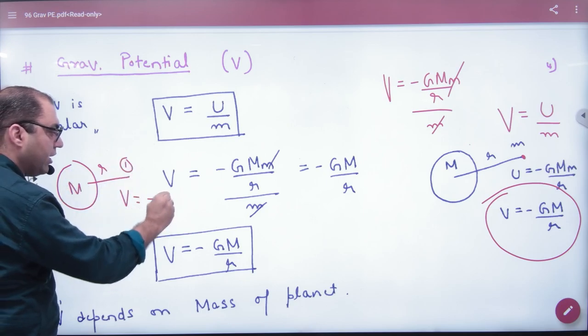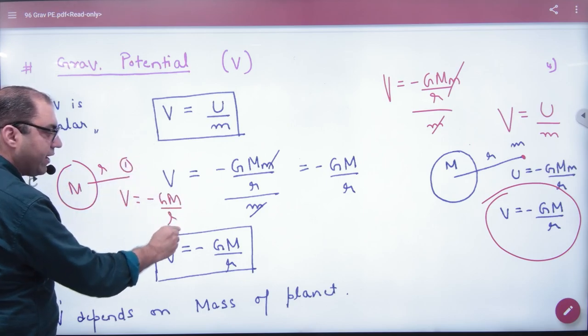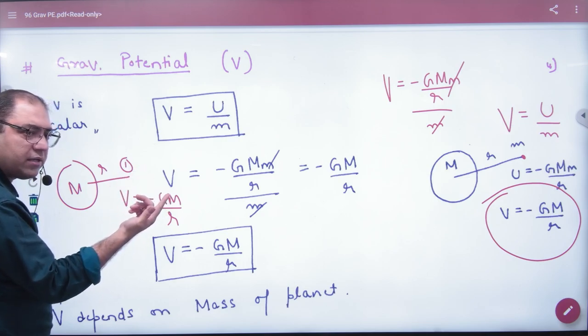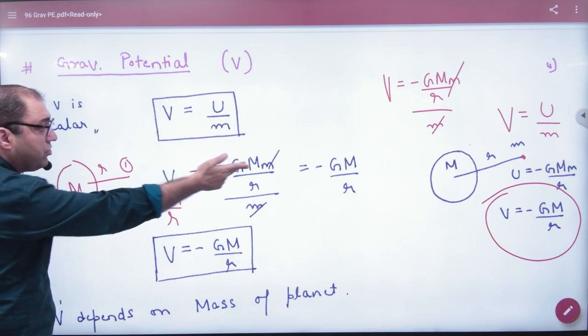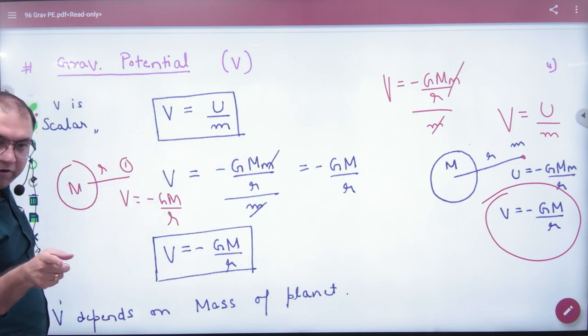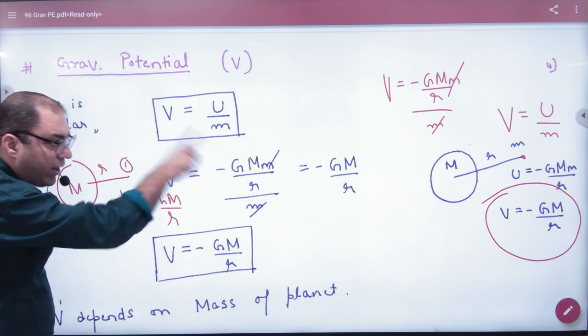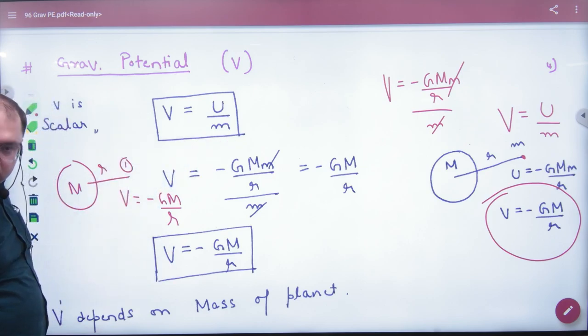To mass one hai, to bolo, is mein energy ka formula kya lagaya, M aur one mein, minus G M into one by r, woi baat hai, same hai. To aapko ye mass chahiye nahi, kai log aise bhi yaad karte hai, energy ke formulae, small m ko zero, one put kar deti hai. Toh potential ka formula, planet ke mass pe depend karta, woh individual point mass pe depend nahi karta.